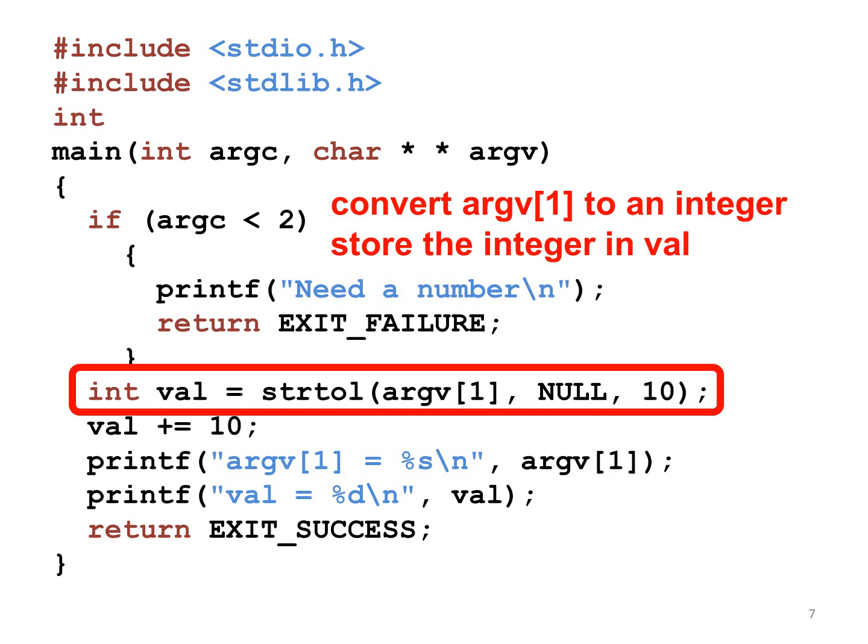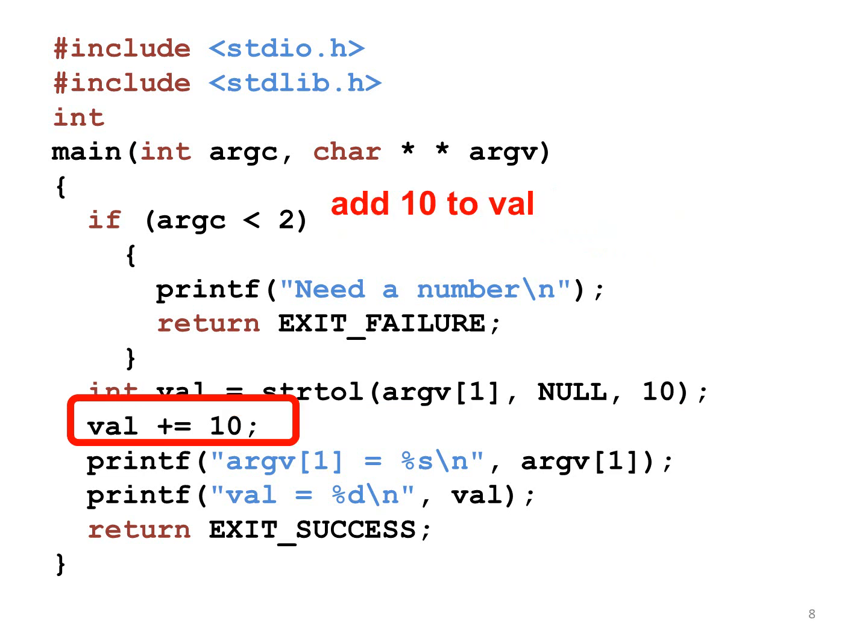Therefore, it is 10. It is necessary to convert argv with index 1 to an integer because argv[1] is a string, not an integer.